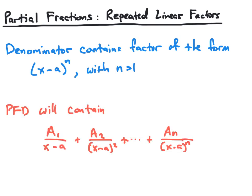When we have such a factor, the partial fraction decomposition for our rational function will contain an expression of the following form. We will have a constant a1 over x minus a, plus a constant a2 over x minus a squared, all the way up to a constant a sub n over x minus a to the nth power, where n is the power of that factor in the denominator of our rational function. So let's take a look at how to use this partial fraction decomposition in an example.